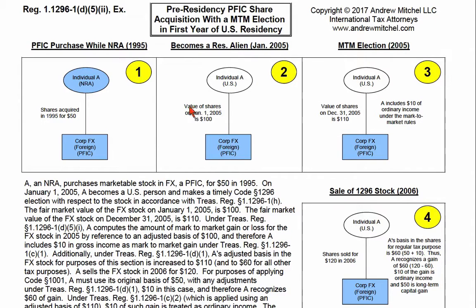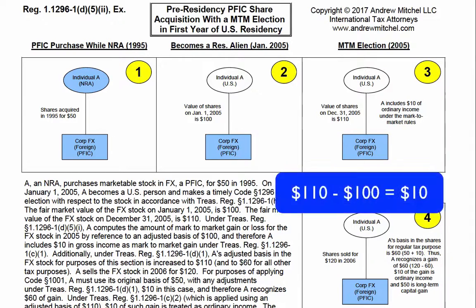The fair market value of the stock at the beginning of 2005 is $100, and the fair market value of the FX stock at the end of 2005 is $110. A computes the amount of mark-to-market gain or loss for the FX stock in 2005 by reference to an adjusted basis of $100, and therefore A includes $10 in gross income as mark-to-market gain.